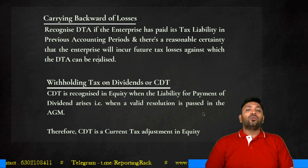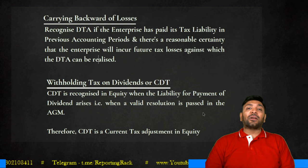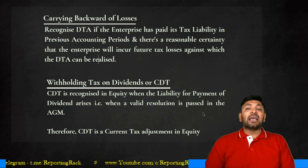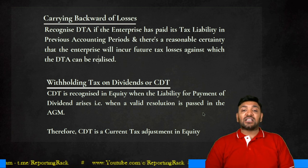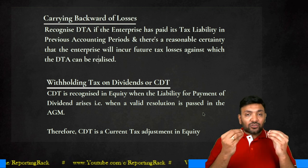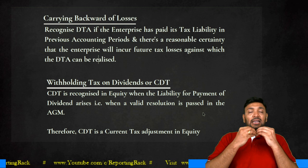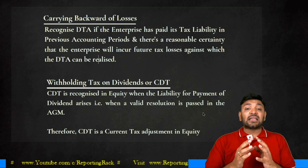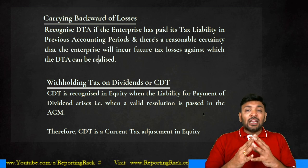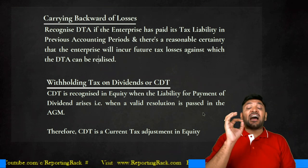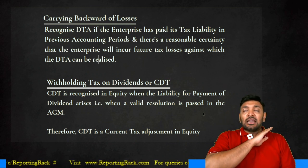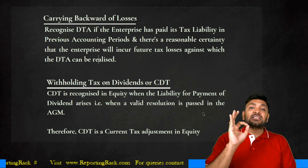Withholding tax on dividends or Corporate Dividend Tax (CDT) — recently abolished — should always be an adjustment in the statement of changes in equity. Since proposed dividends are not recognized as a liability, CDT is also never recognized as a liability. CDT is directly recognized as an adjustment from other equity only when a valid resolution is passed in the AGM, and it never appears in P&L.